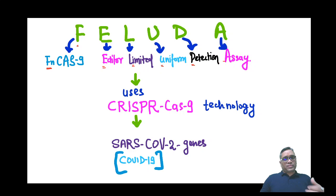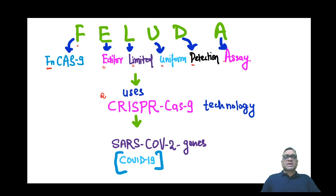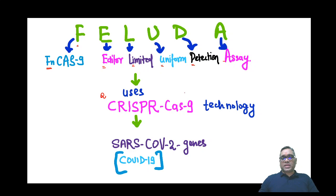What is the basic principle of the Feluda test? The basic principle is utilization of CRISPR-Cas9 technology — remember this can be an MCQ in your exam. The Feluda test uses CRISPR-Cas9 genome editing technology. By using this genome editing technology, we are going to identify SARS-CoV-2 genes, which cause COVID-19 infection.